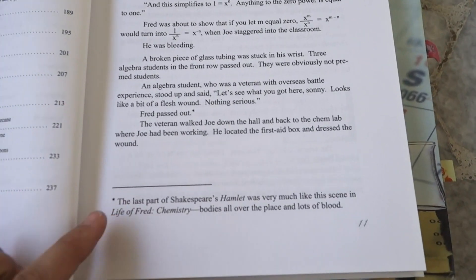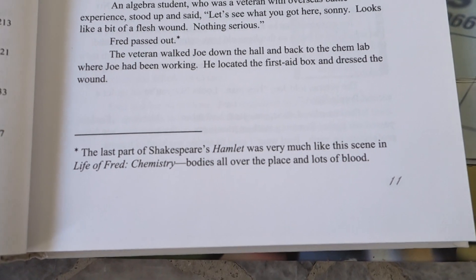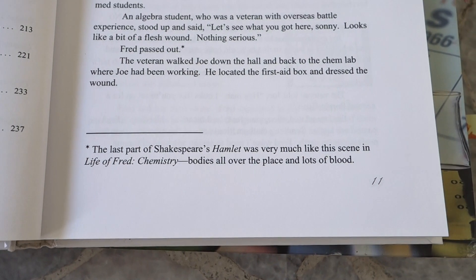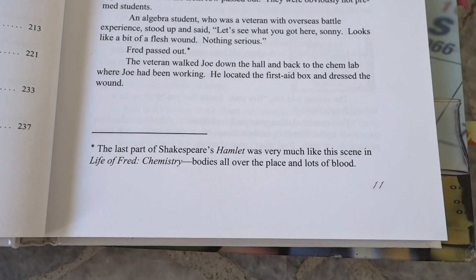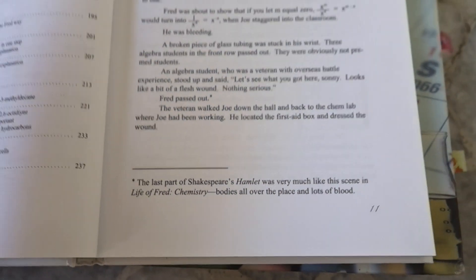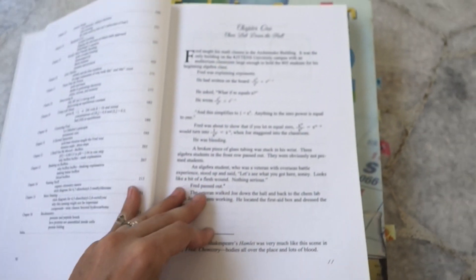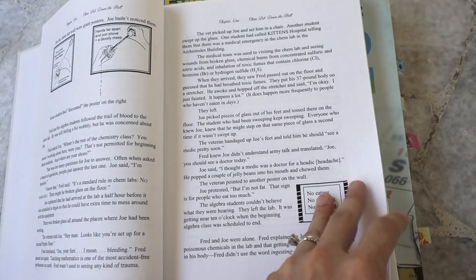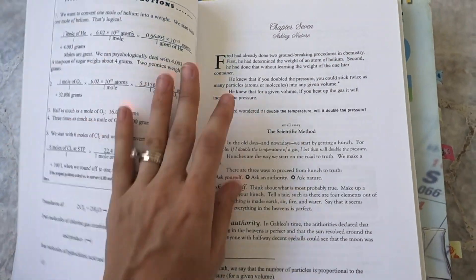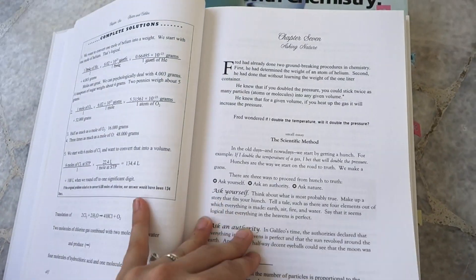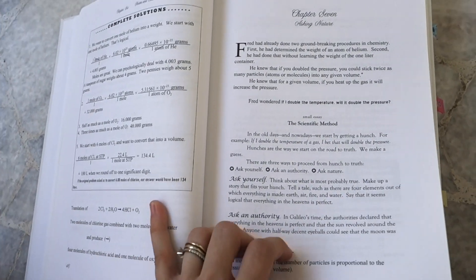But I'll just give you, this footnote right here on the very first page is an example of what life of Fred is like. Always read the footnotes. The last part of Shakespeare's Hamlet was very much like this scene in life of Fred chemistry. Bodies all over the place and lots of blood. This is where I'm saying this is a little bit different than your average chemistry textbook. There are quite a few interesting moments all throughout here.